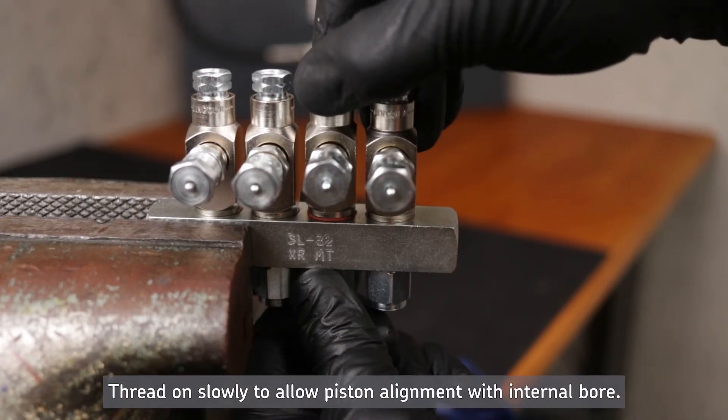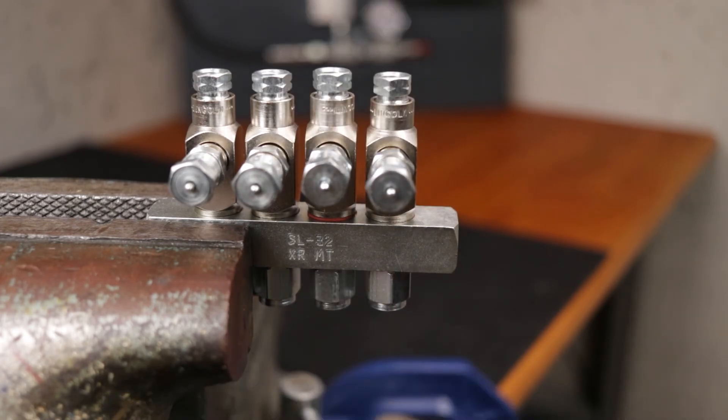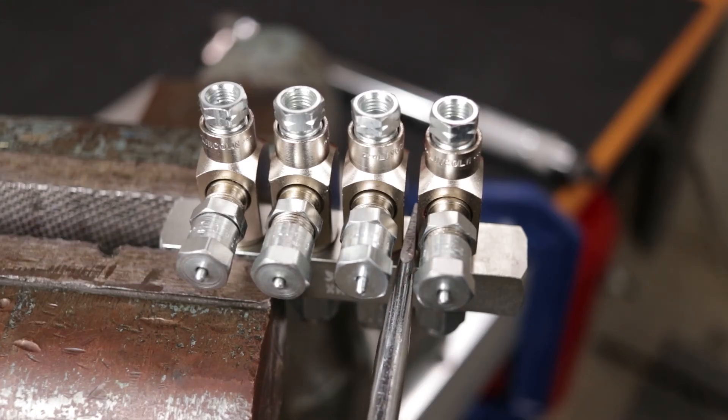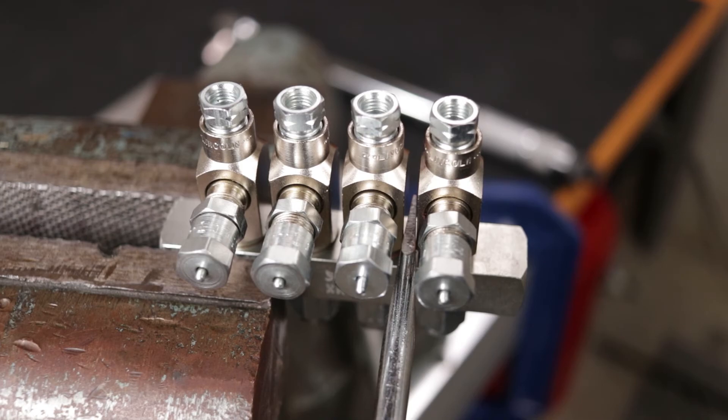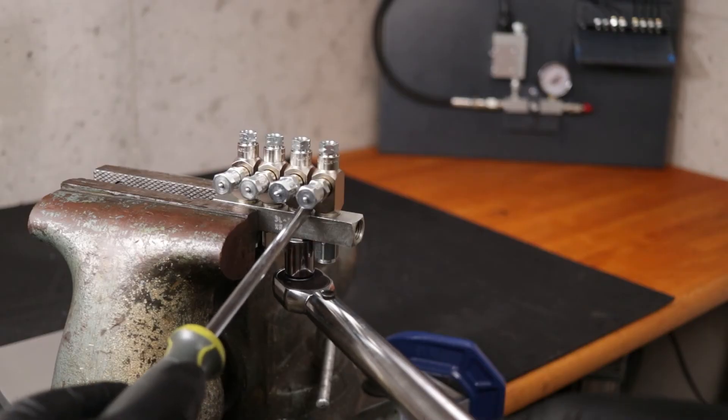Align the injector with the others on the manifold and hand tighten the adapter. Use a box end wrench or wedge a screwdriver in between the injectors already installed to keep from twisting, then torque the adapter to 15 foot-pounds.